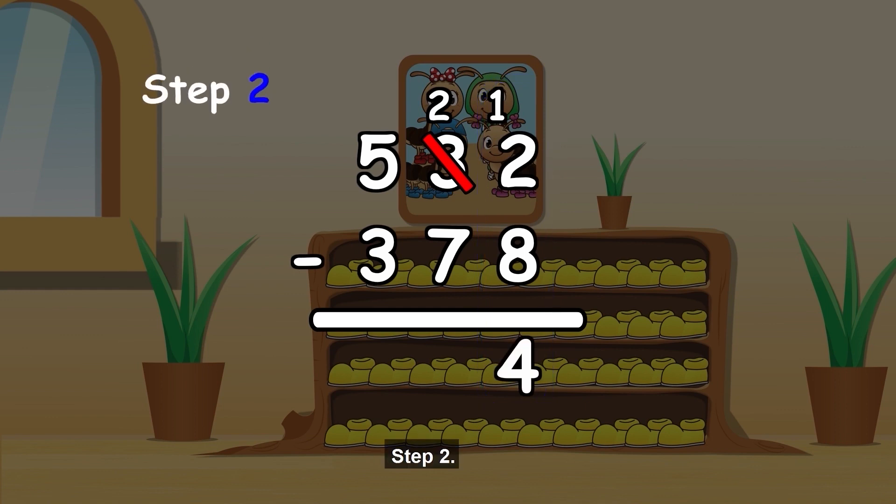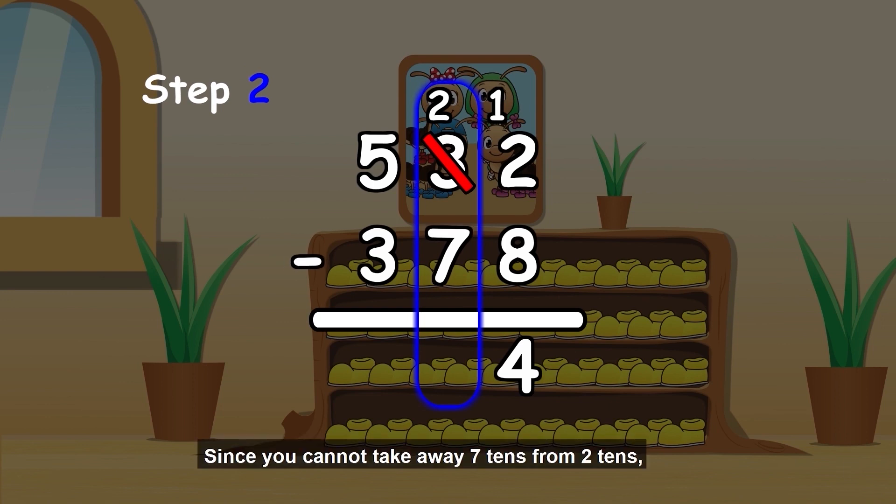Step 2. Subtract the tens. 2 minus 7. Since you cannot take away 7 tens from 2 tens, we regroup the hundreds and tens.